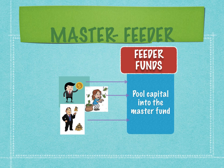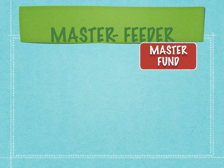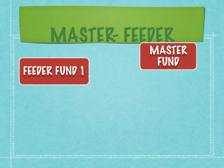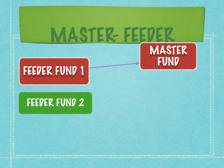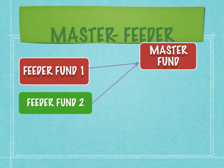Pooling means the collective aggregation of capital. The feeder fund collects this pooled capital and feeds it to the master fund. There can be up to seven or eight different feeder funds investing in the same master fund. Similarly, feeder fund one can invest not only in one master fund but also in another master fund — there is no restriction on the amount invested by feeder funds into a master fund, nor on the number of master funds a single feeder fund can invest in.